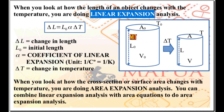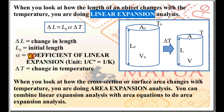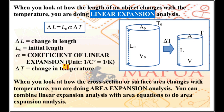If we look at how the length changes with respect to temperature, we have: delta L is equal to L-naught times alpha times delta T. Delta L is the change in length — final length minus initial length, so L minus L-naught. L-naught is the initial length of the object. Alpha is the coefficient of linear expansion, with units of per Celsius degree or per Kelvin. The coefficient of linear expansion is a property of the material; each material has its own value.